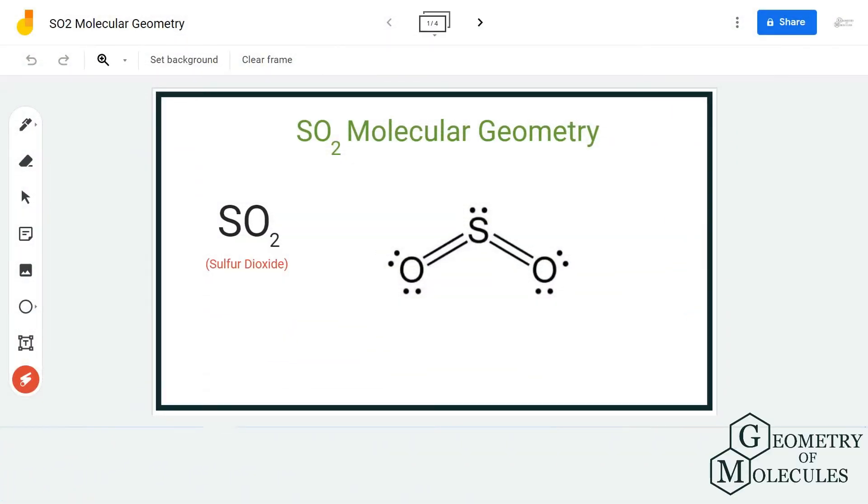Hi guys, welcome back to our channel. In today's video, we are going to help you determine the molecular geometry for SO2 molecule, which also has a chemical name of sulfur dioxide. To understand its molecular geometry, we are first going to look at its Lewis structure.